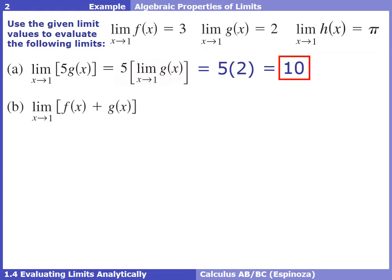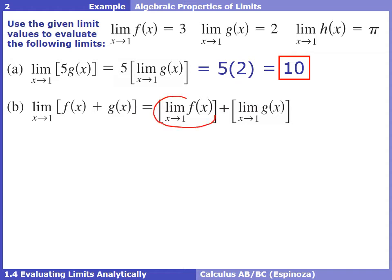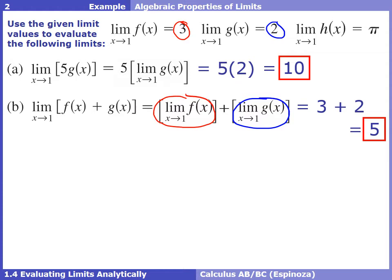In part b, we want the limit as x approaches 1 of f plus g. Using the sum and difference rule, we split this into the limit of f separately plus the limit of g separately. The limit of f is 3 and the limit of g is 2, so we simply add 3 plus 2 to get 5 — and we did this all without a graph or plugging in numbers.